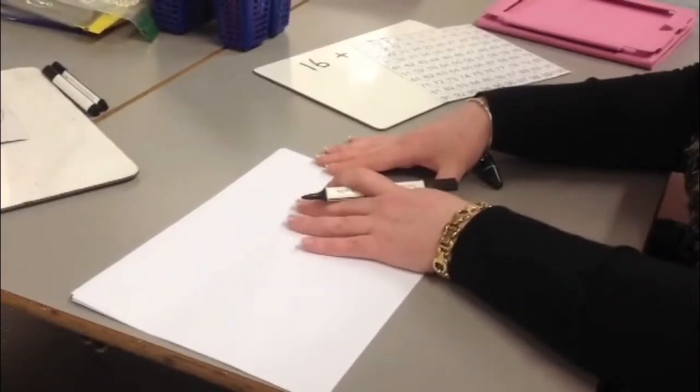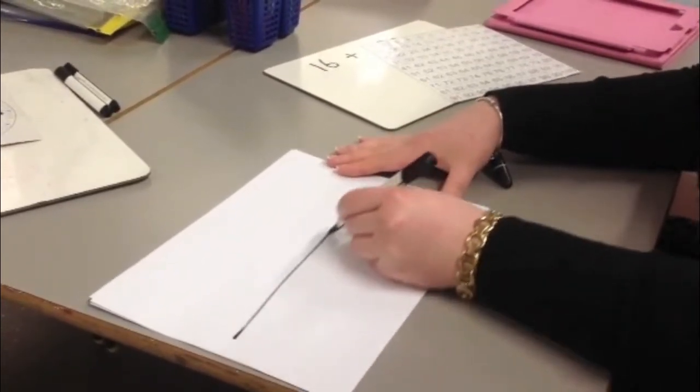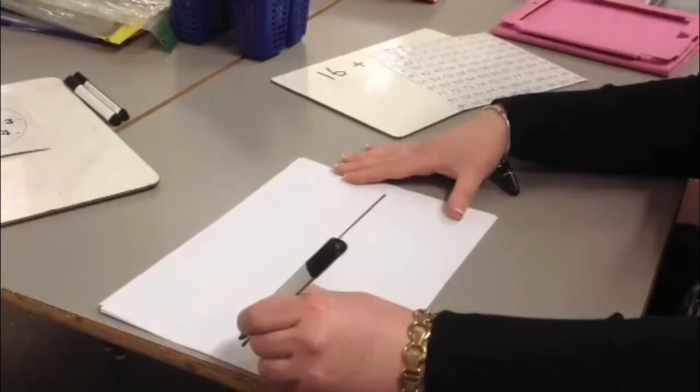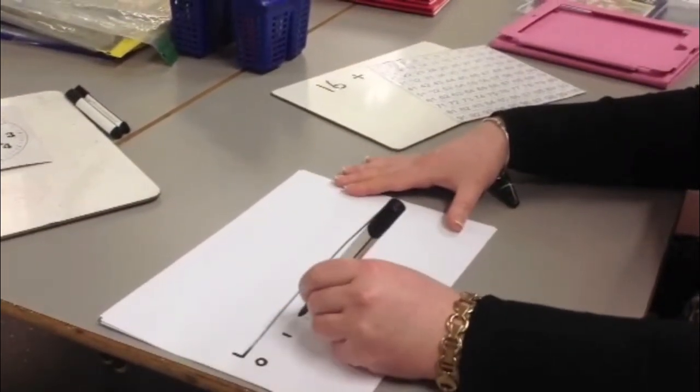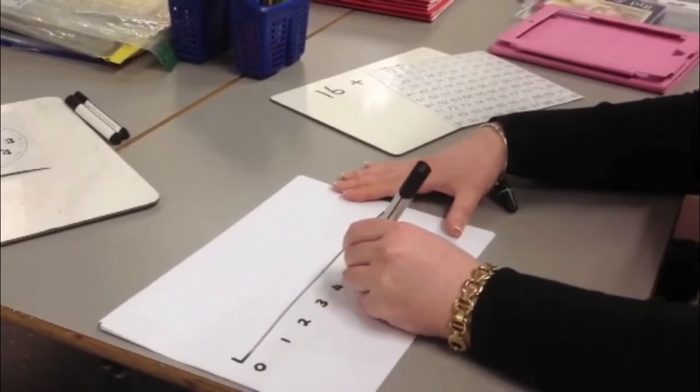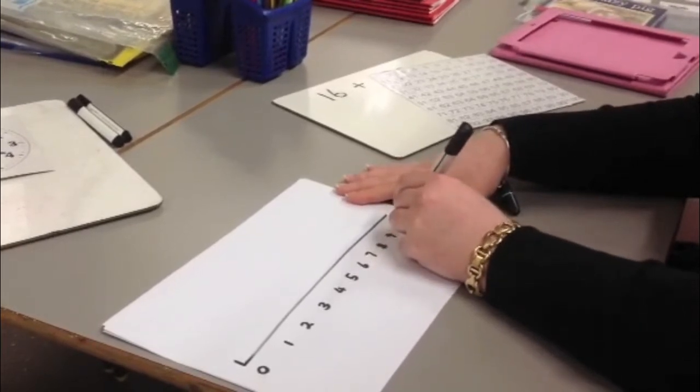You should have a number line at home, but if you don't, this is how you make one. Draw the line, put your numbers 0 to 10: 0, 1, 2, 3, 4, 5, 6, 7, 8, 9, 10.